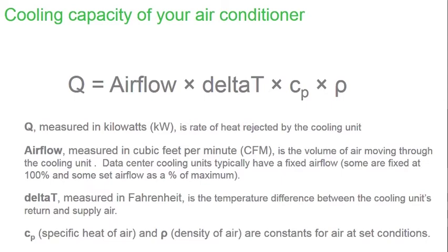Q, measured in kilowatts, is the rate of heat rejected by the cooling unit, and this represents the heat from your IT equipment. Then we have the airflow, measured in cubic feet per minute — sometimes you hear people call it CFM — and this is the volume of air moving through the cooling unit. Delta T, measured in Fahrenheit, is the temperature difference between the cooling unit's return and supply air. Finally, we have CP, the specific heat of air, and rho, the density of air — these are constants for air at set conditions.